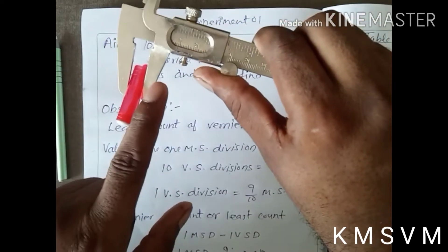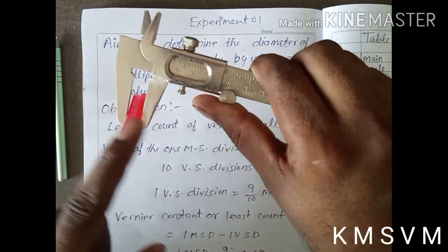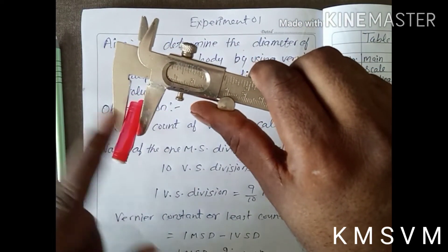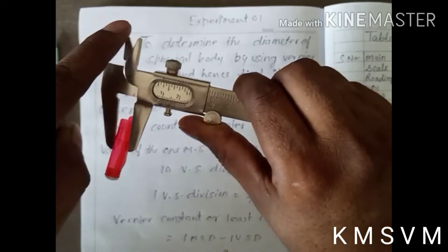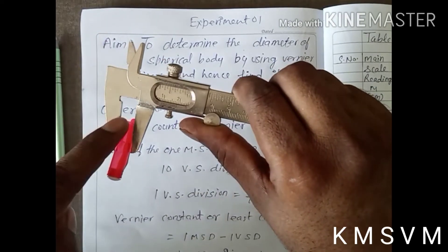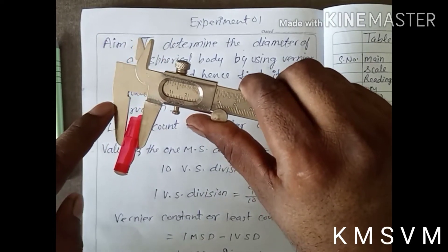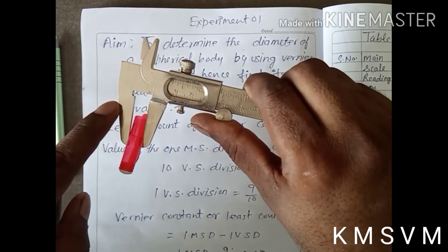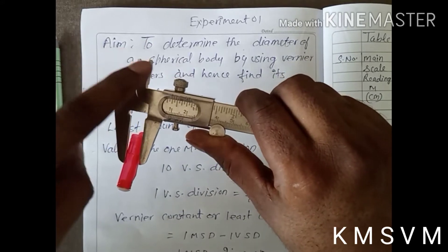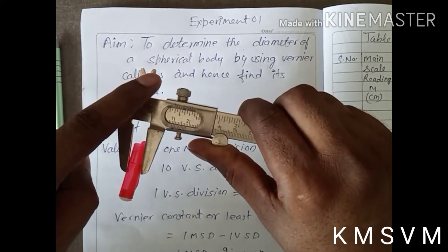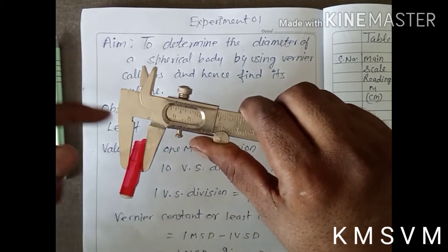We can use the lower jaw and these are the upper jaw. By the lower jaw, we can find the external diameter and by the upper jaw, we can find the internal diameter.